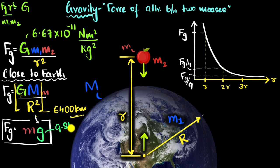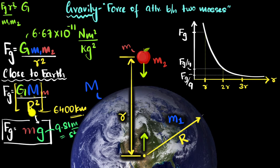So this g — this 9.81 — is actually the acceleration objects experience close to Earth. That is the acceleration an apple would feel if you drop it, ignoring all other forces, in vacuum. What's interesting is that this number is independent of the mass of the object — it only depends on the mass of the Earth, the radius of the Earth, and the value of capital G. That means every object close to Earth, if you drop it, will accelerate at 9.81 meters per second squared.